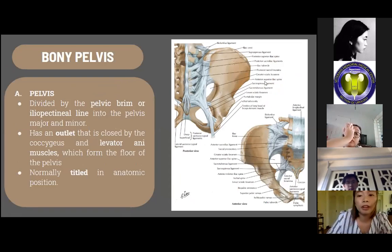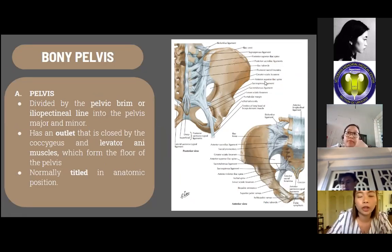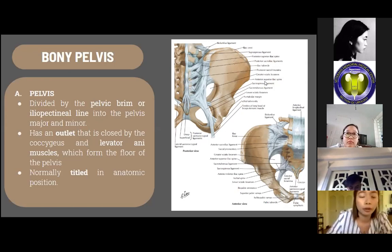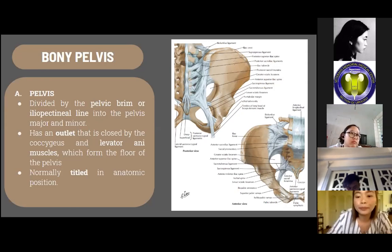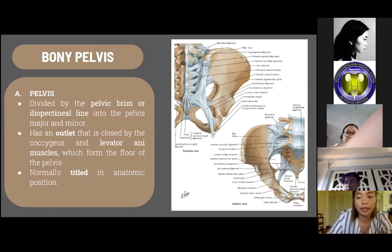The bony pelvis is divided by the pelvic rim or the iliopectineal line into the pelvis major and the minor. The outlet is closed by the coccyx and the levator ani muscles, which form the floor of the pelvis. In normal anatomical position, the anterior superior iliac spine and the pubic tubercles are in the same vertical plane. In a standing position, the pelvis curves obliquely backward relative to the trunk and the abdominal cavity.